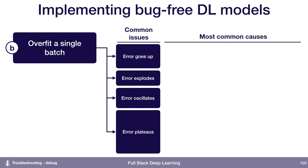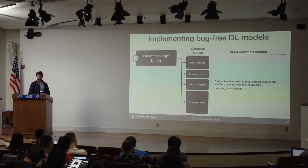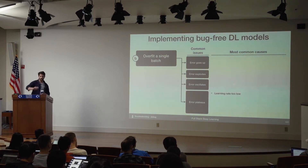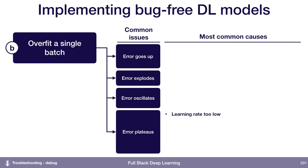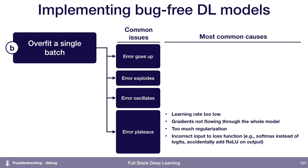If the error oscillates — goes up and down — the first thing to try is just lowering your learning rate. If that doesn't work, inspect your data for shuffled labels or incorrect data augmentation making the problem too difficult. If the error plateaus, try turning up the learning rate and removing all regularization to break through. If that doesn't work, check your loss function to make sure it's defined as you expect, and look at your data pipeline for bugs in how data is being fed into the model.